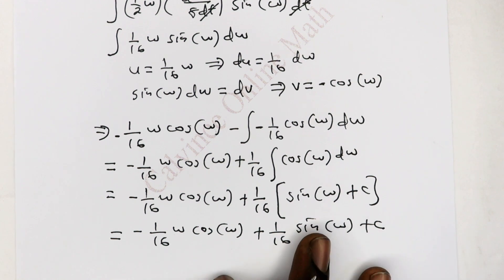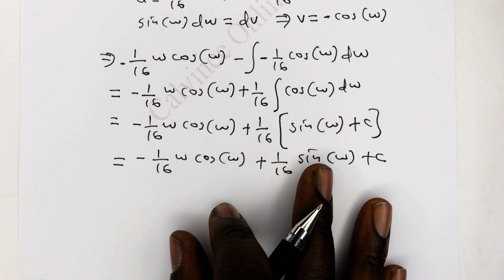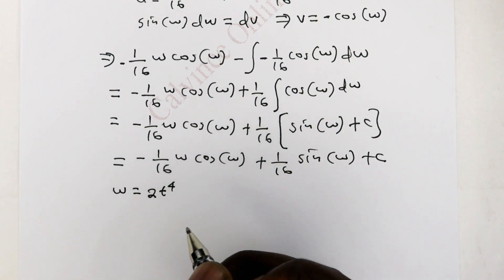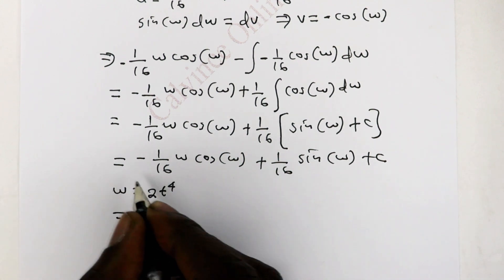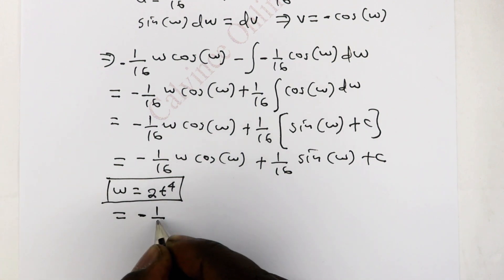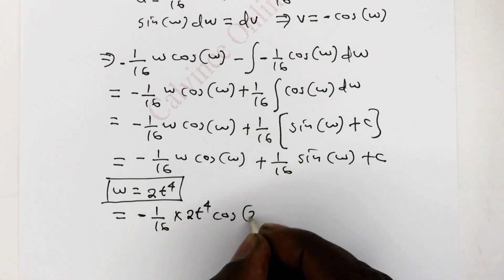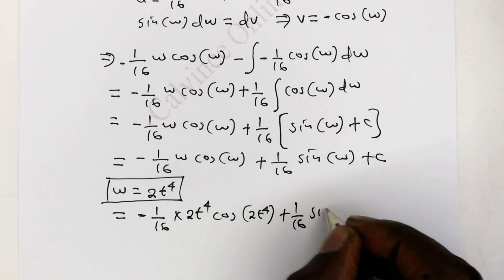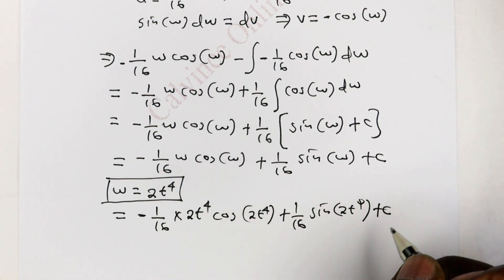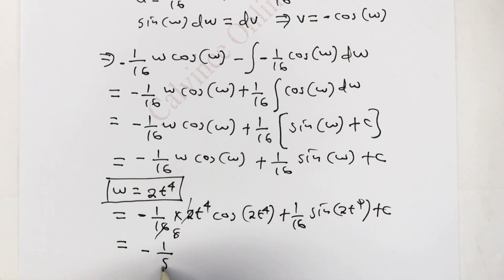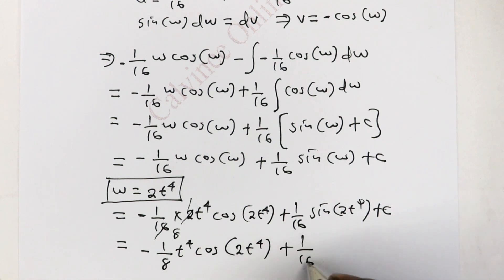Remember that we represented some terms by w, so we substitute back. We said w = 2t^4. Substituting back gives negative (1/16) times 2t^4 times cos of 2t^4, plus (1/16) sin of 2t^4, plus the constant of integration C.